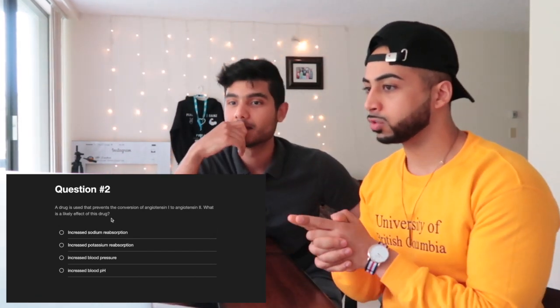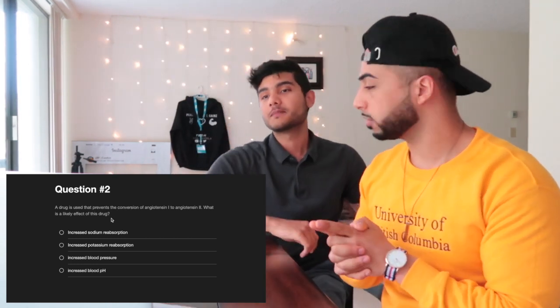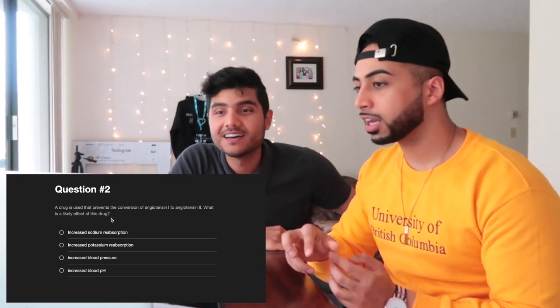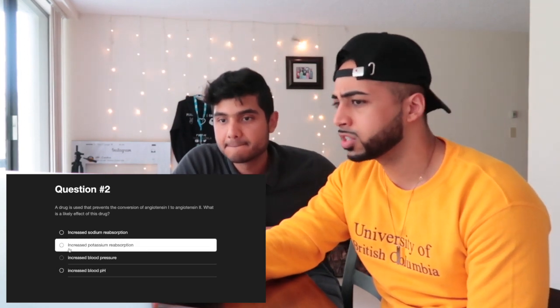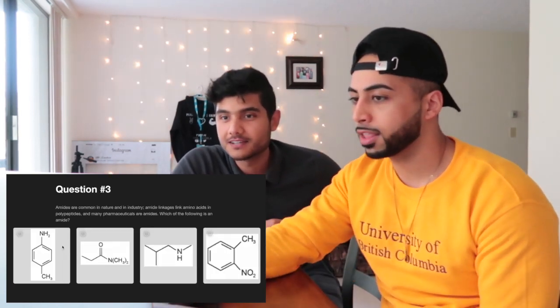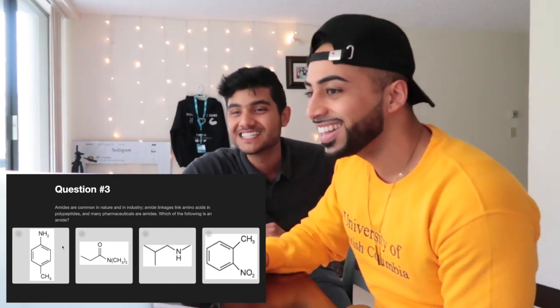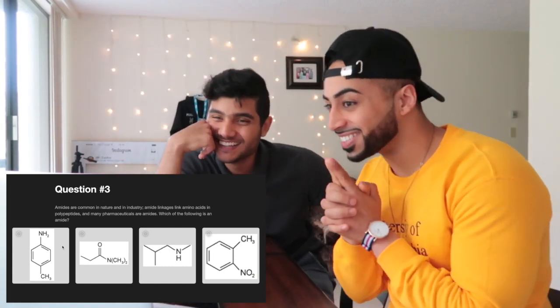Question two involves the renin-angiotensin system. Angiotensin I converts to angiotensin II, and that activates ACE. If a drug is inhibiting ACE, it's going to stop increased sodium reabsorption and stop increased blood pressure. It might affect potassium reabsorption — sodium comes in and potassium goes out — so the reverse would apply. They note they almost skipped over the word 'prevent' — that's how the MCAT tries to trick you.